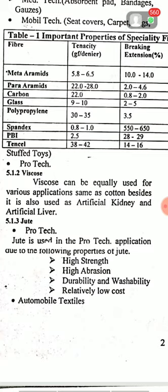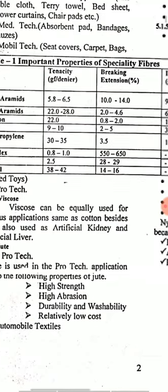Viscose can be equally used for various applications same as cotton. Besides, it is also used as artificial kidney and artificial liver. Next is jute, which is used in protech, meaning protective textiles. Jute is used in protech applications mainly because of its high strength, high abrasion resistance, durability, washability and relatively low cost. It is also used in automobile textiles.